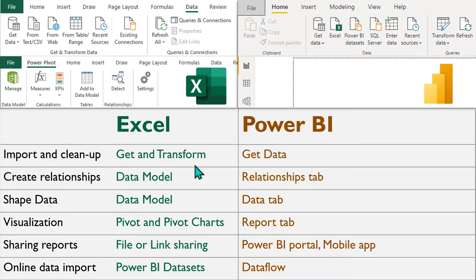I'm talking about the latest version of Excel, so exactly what I'm showing may or may not be available in your version. In Excel you should have the Data tab. If you have an older version you'll see Get External Data; in the new version it's called Get and Transform. In Power BI it's also called Get Data and Transform Data.